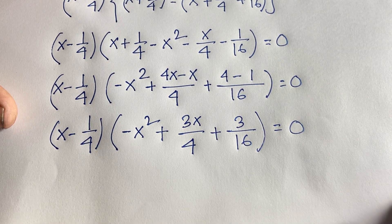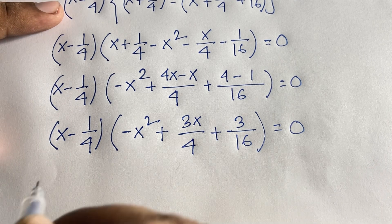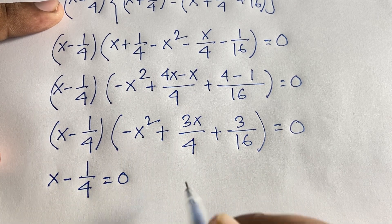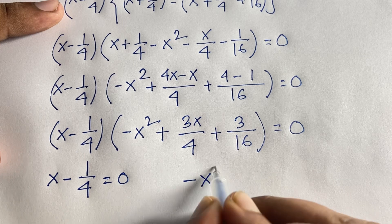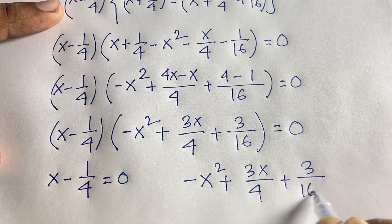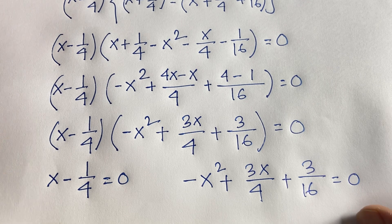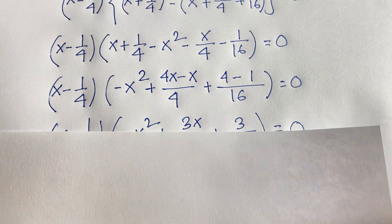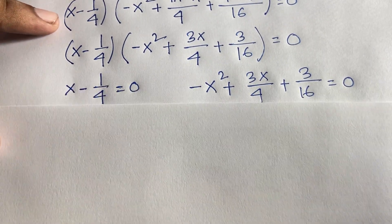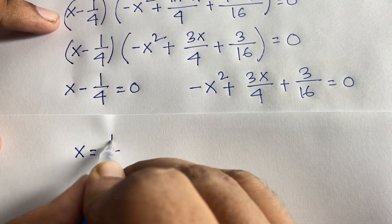We now have two cases. Case 1: x minus 1 over 4 equals 0, which gives x equals 1 over 4. Case 2: minus x squared plus 3x over 4 plus 3 over 16 equals 0.